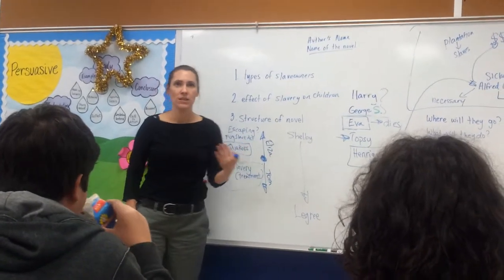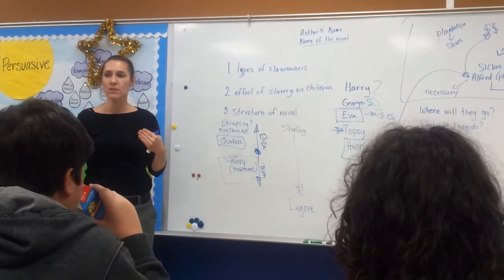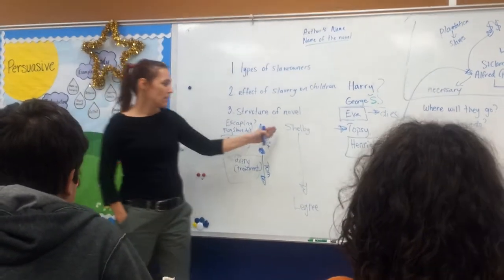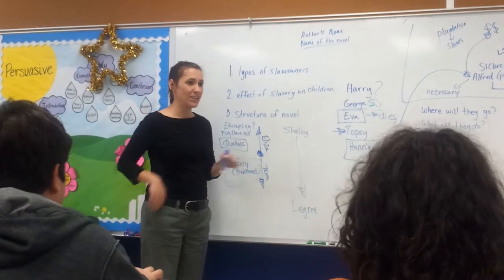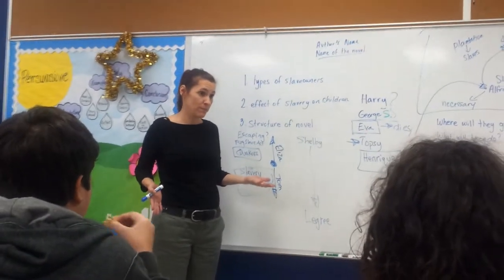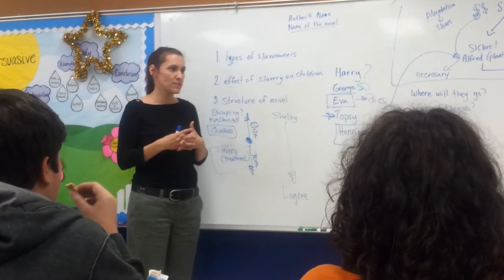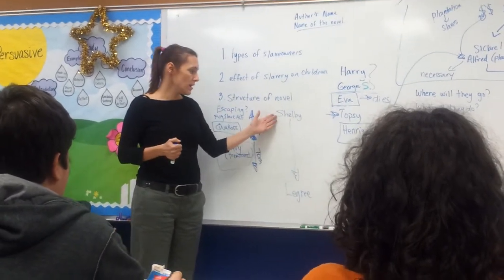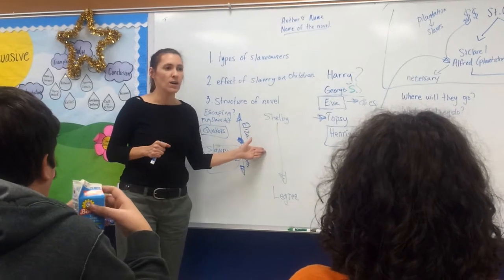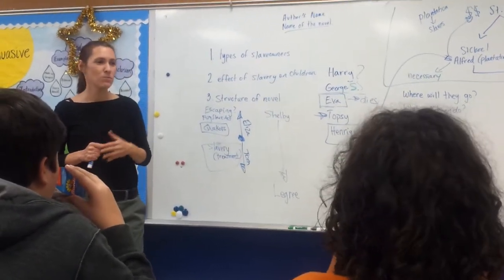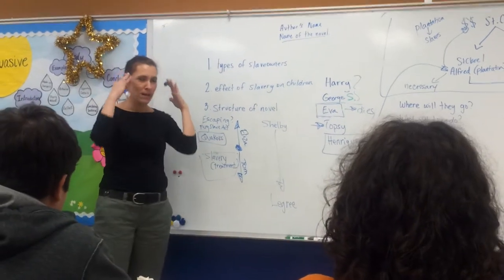Also, by going through this journey this way, you get an opportunity to see Tom the human being, versus Tom the slave. Because under Shelby's care and Augustine's care, he has a lot of freedom. You see him interacting with people as friends versus as a slave.